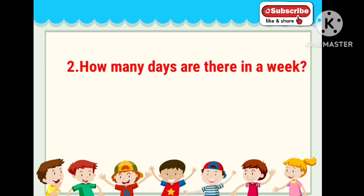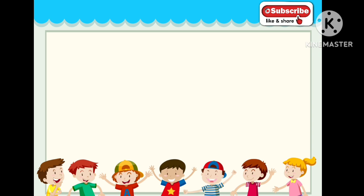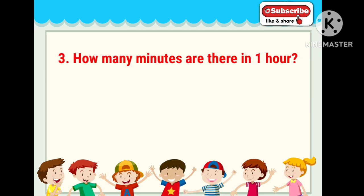How many months are there in a year? 12 months. How many days are there in a week? Seven days. How many minutes are there in one hour? 60 minutes.